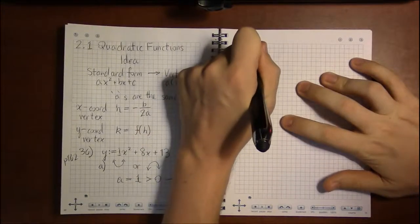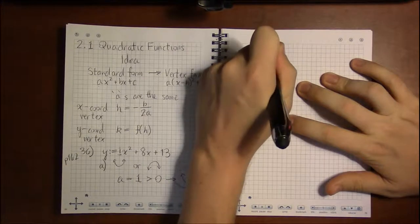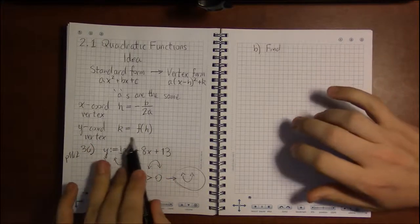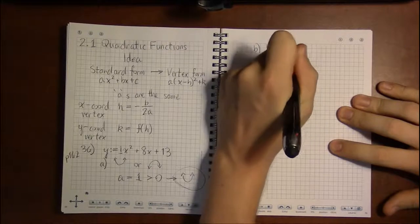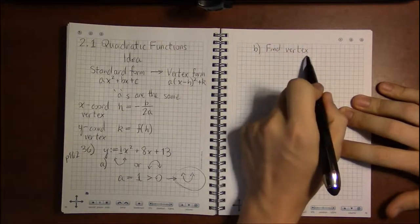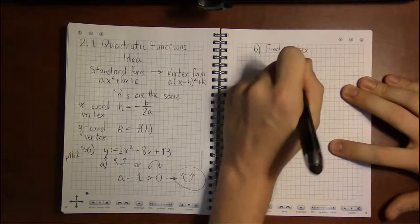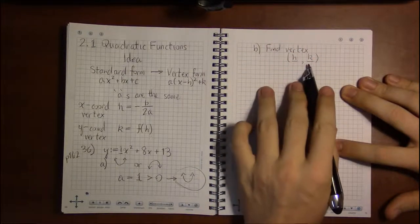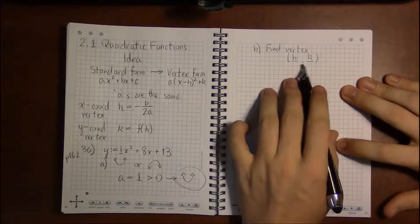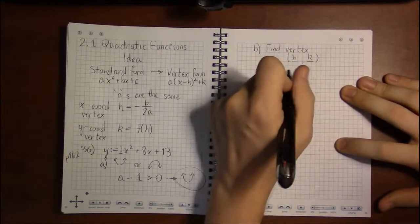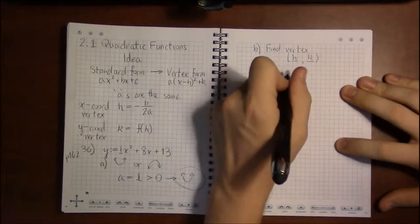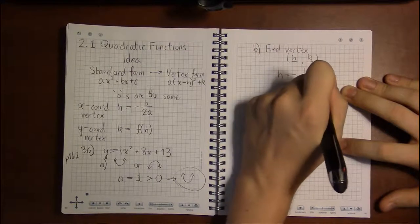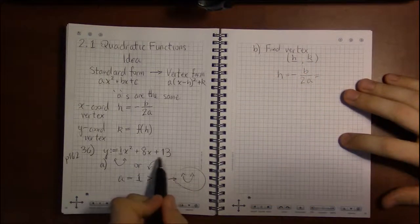Now part B of this problem asks us to find the vertex, which is where we're going to be using these formulas for h and k in terms of the standard form. So our answer for the vertex should be a point. Because that's what the vertex is. The vertex is a point, which we call h, k. We call the x coordinate h and the y coordinate k. So we're going to need to find two numbers to satisfy the answer for B.